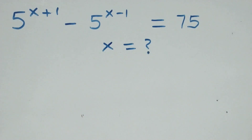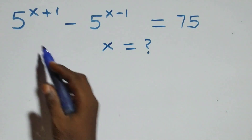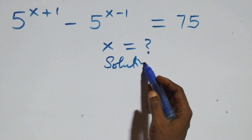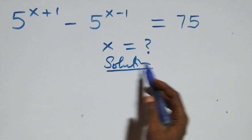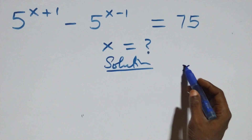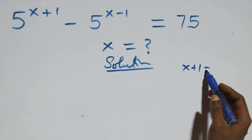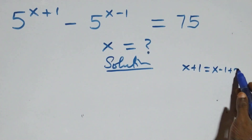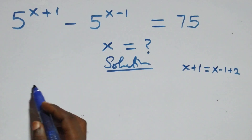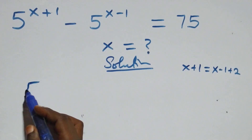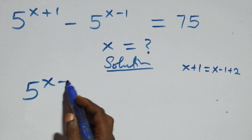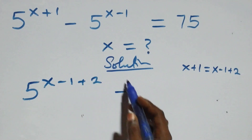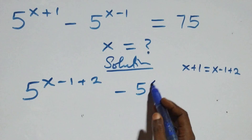Hello, welcome. We solve this exponential equation. The power x plus one can be written as x minus one plus two. So we rewrite the expression as 5 raised to the power x minus one plus two, then minus 5 raised to the power x minus one, equals 75.